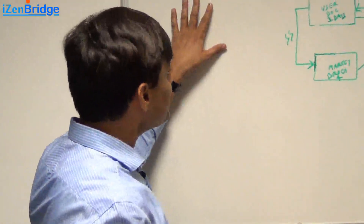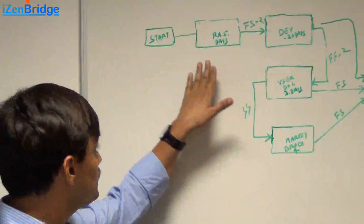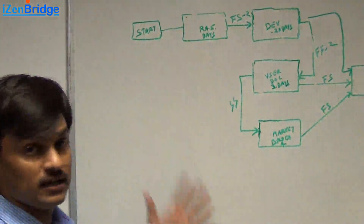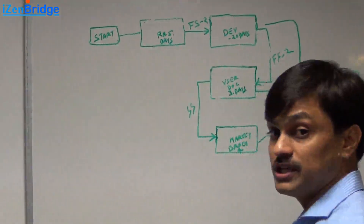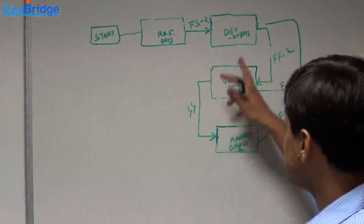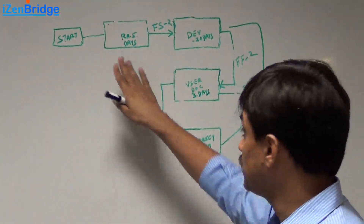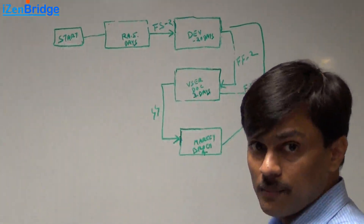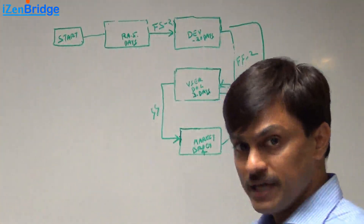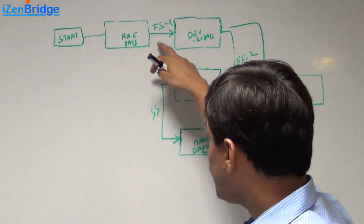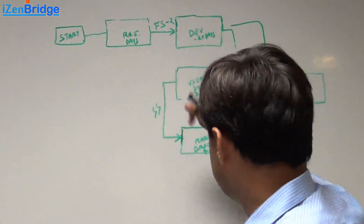We are starting a project with a requirement analysis activity. This activity will take 5 days and once we are done with requirement analysis, we will move to development. Development will take 20 days and we have a finish-to-start relationship between requirement analysis and development. We will lead the development activity by 2 days, meaning we are using an FS-2 relationship — so there is a lead of 2 days.